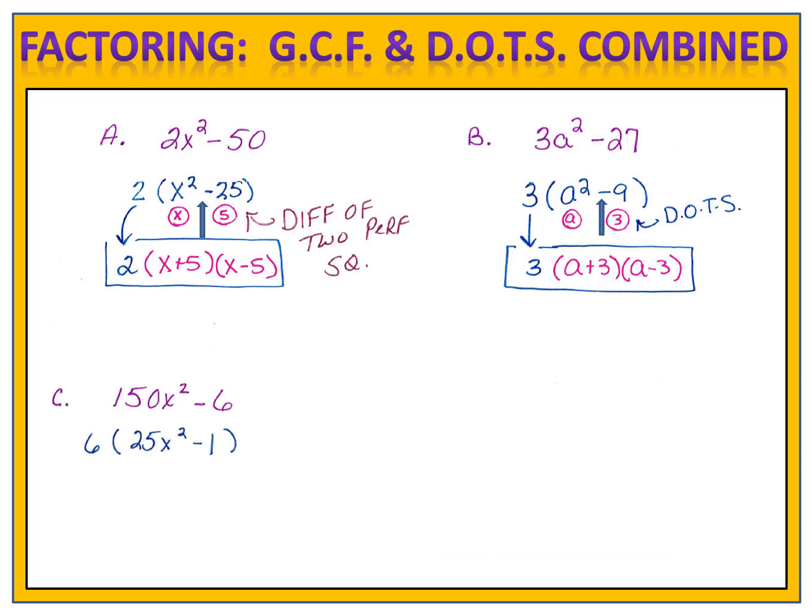We begin by finding the greatest common factor, which is 6. We divide both terms by 6, and in the parenthesis are left with 25x squared minus 1. We notice right away that this is a difference of two perfect squares. 25x squared minus 1 can be factored into 5x plus 1, and 5x minus 1. Don't forget to bring down that common factor from earlier in the problem, and now we have factored that binomial completely.